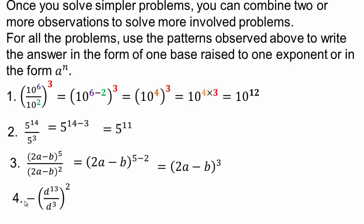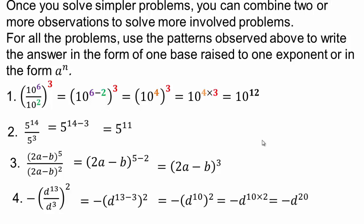Now, see that negative? Does it belong to the inside, or does it stay on the outside? It's very important how you read it. Read it out loud. Here's how I read it: negative of d to the 13 over d to the 3rd, the whole thing, to the 2nd power. The power of 2 belongs to the base. So you simplify that first — which gives you d to the 10th — and then the second power gives you negative d to the 20th.